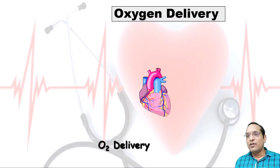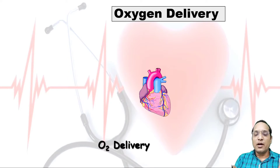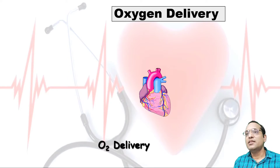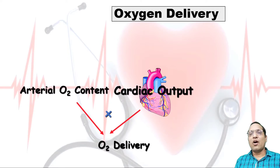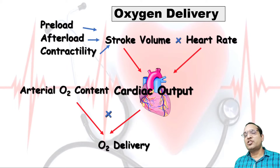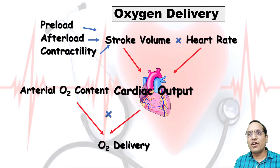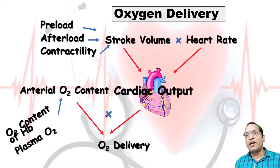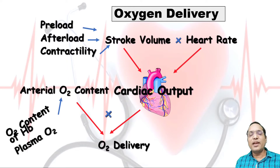Oxygen delivery to the vital organs is dependent on arterial oxygen content and cardiac output, where cardiac output itself is dependent on stroke volume and heart rate. Stroke volume is dependent on preload, afterload, and cardiac contractility. Arterial oxygen content is dependent on the oxygen content of hemoglobin and plasma oxygen solution.